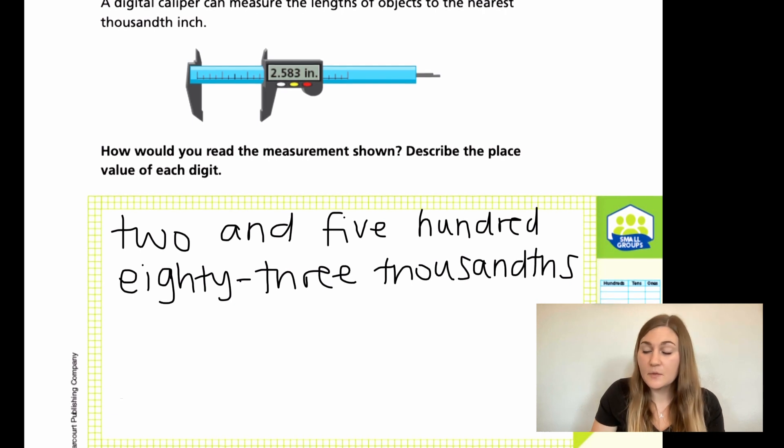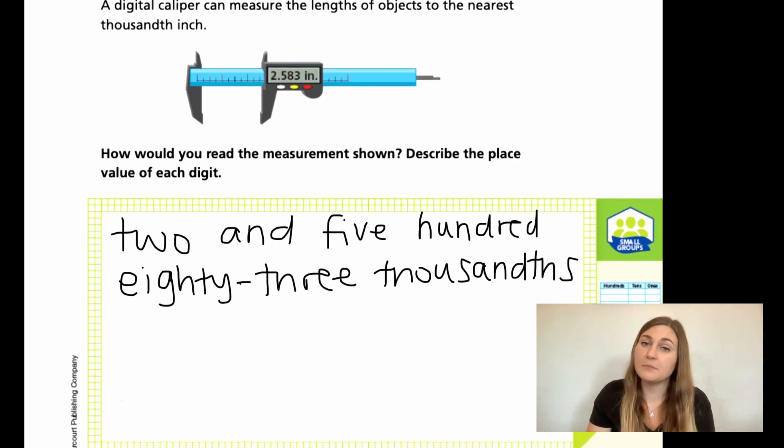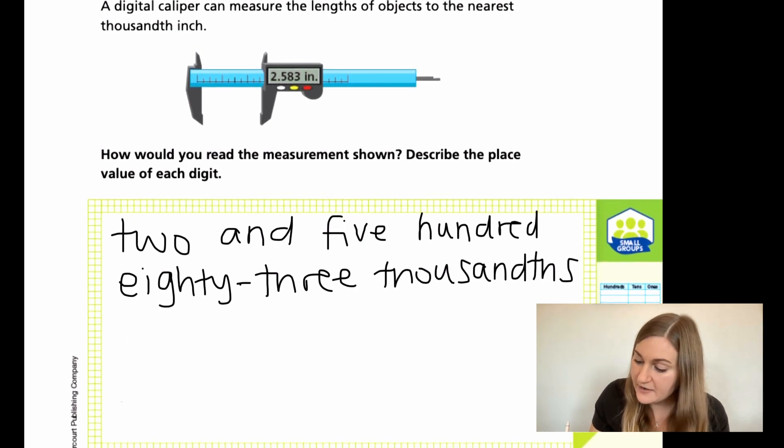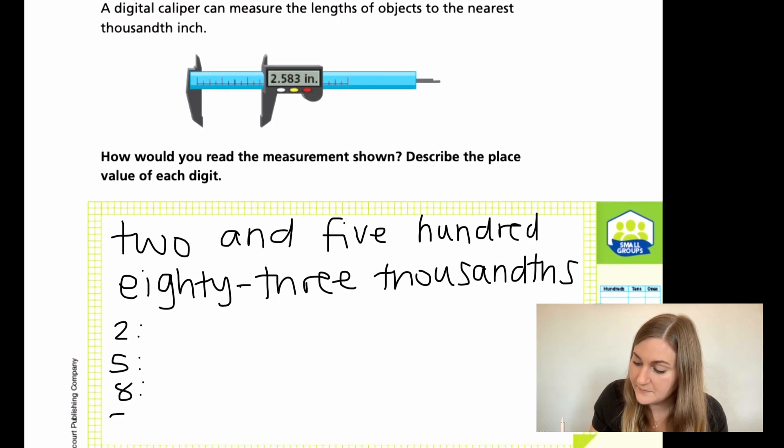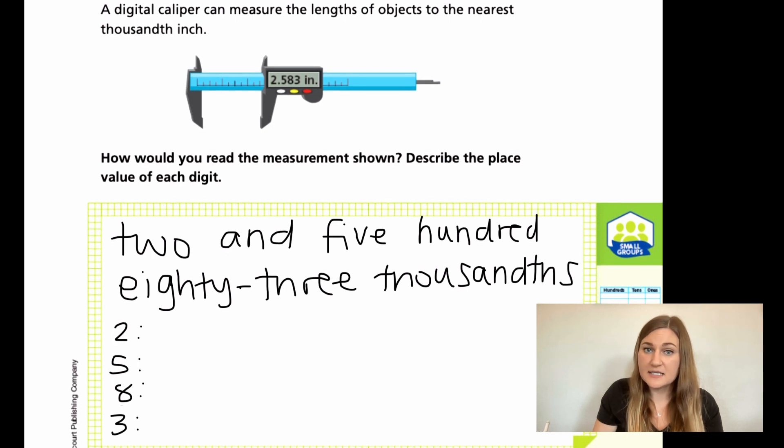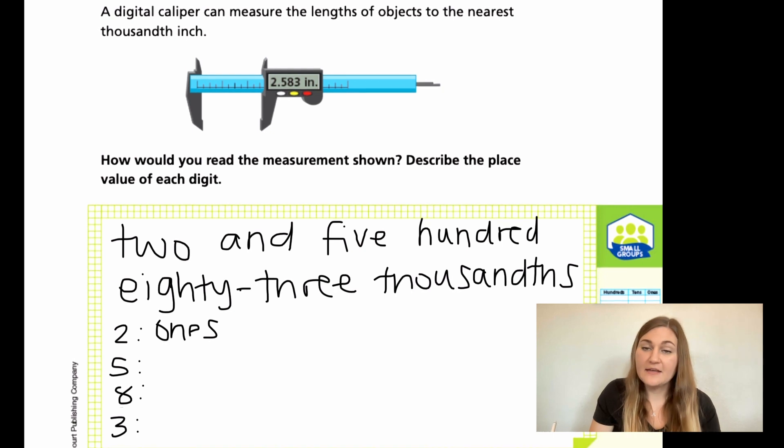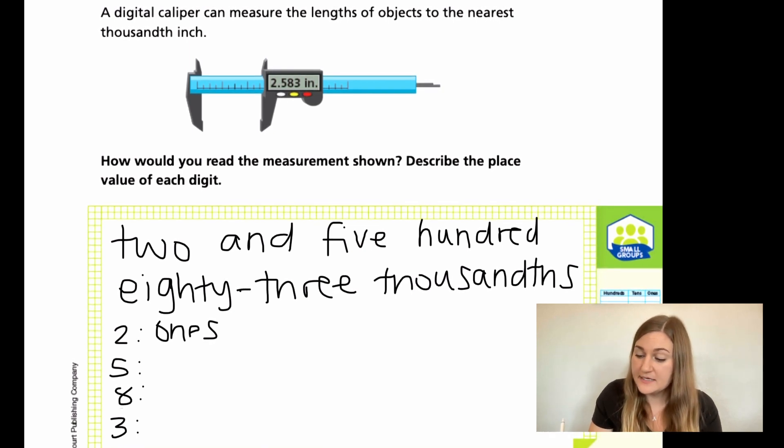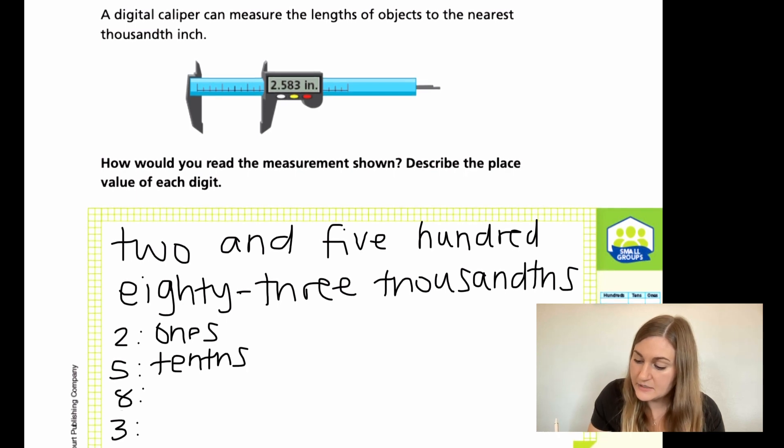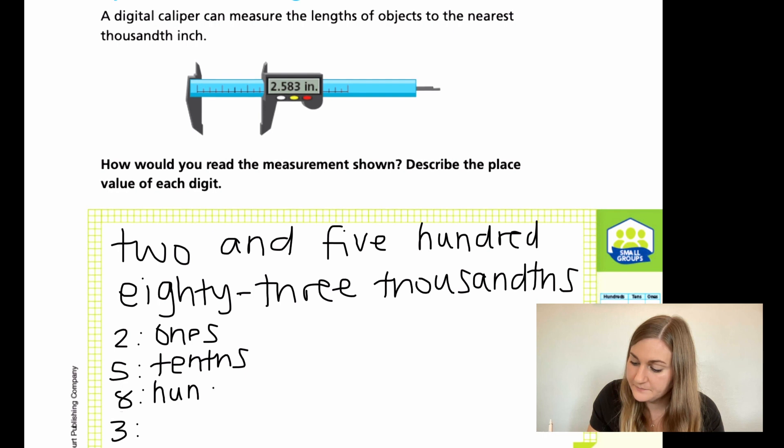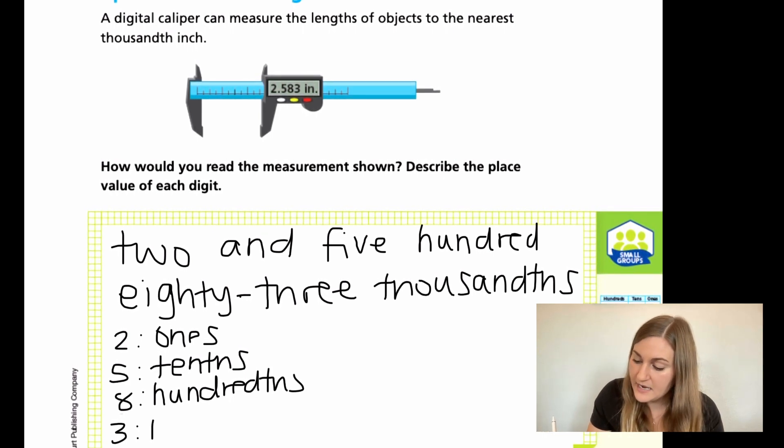Then the second part of the question says, describe the place value of each digit. So I'm just going to take it one number at a time and say what place value it's in. So I have my 2, I have a 5, I have an 8, and I have a 3. That 2, because it's on the left side of the decimal place, is in my 1s. The 5 is on the other side of the decimal place, that's in my tenths. Then the 8, right next door, would be the hundreds. And 3 would be in the thousands.